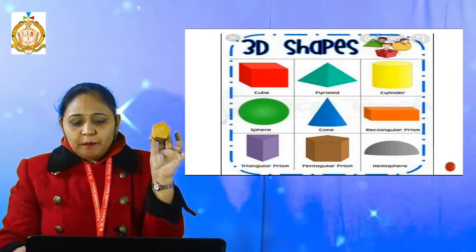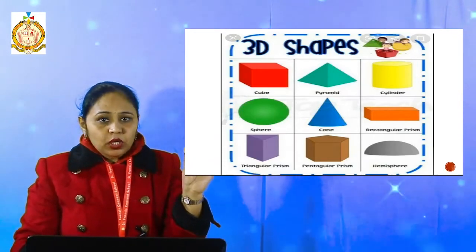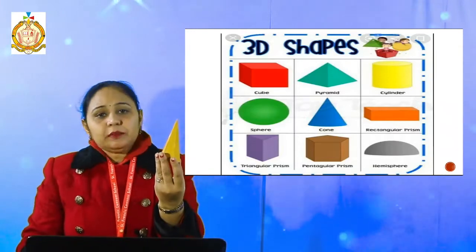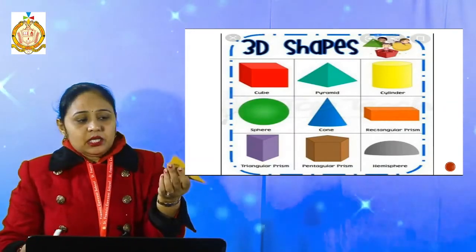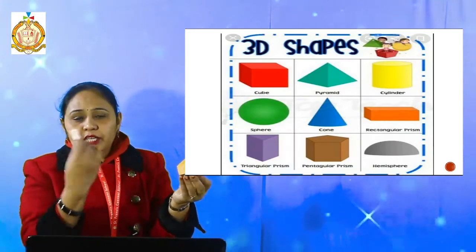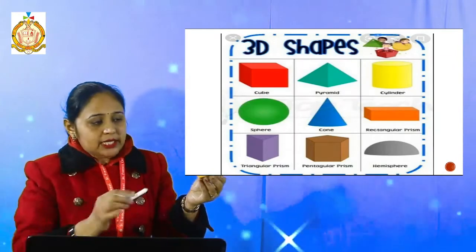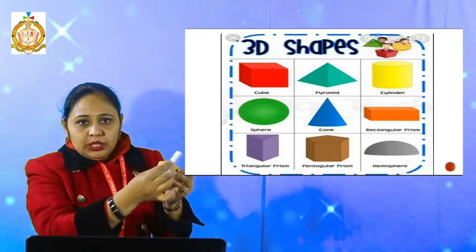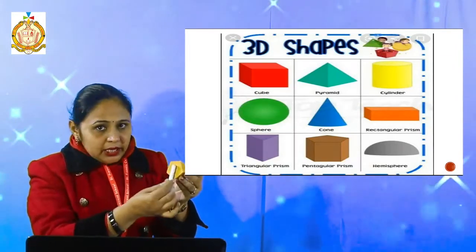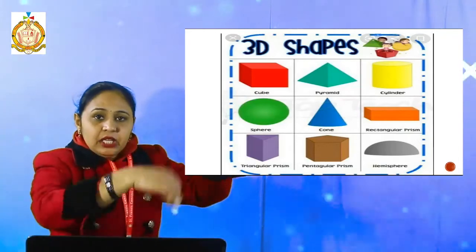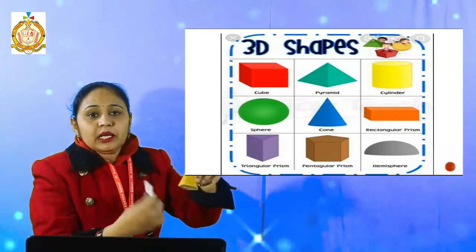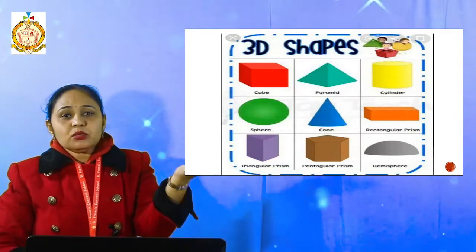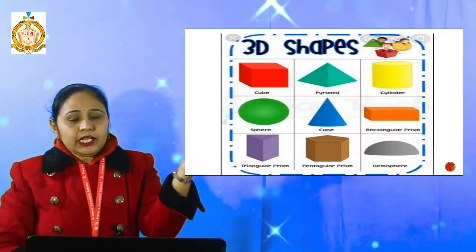This is a pentagonal pyramid. Now how do I identify it as a pentagon? That means five sides are there — one, two, three, four, five. The pentagon is the base and this is our pyramid — it is a pentagonal pyramid. Now I have to count the faces, vertices, and edges of it.